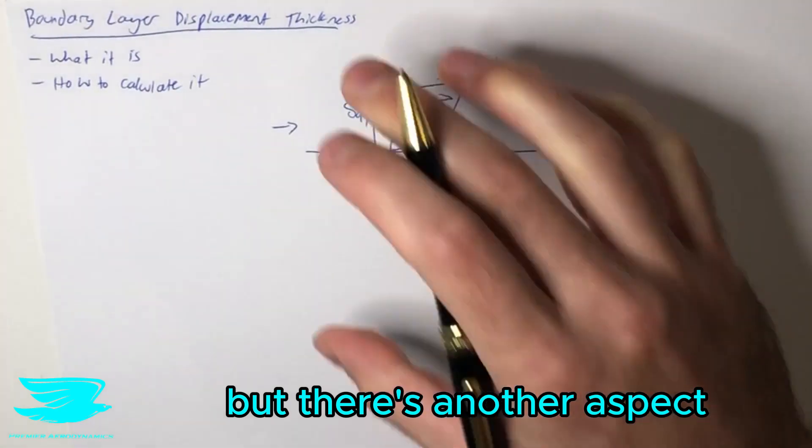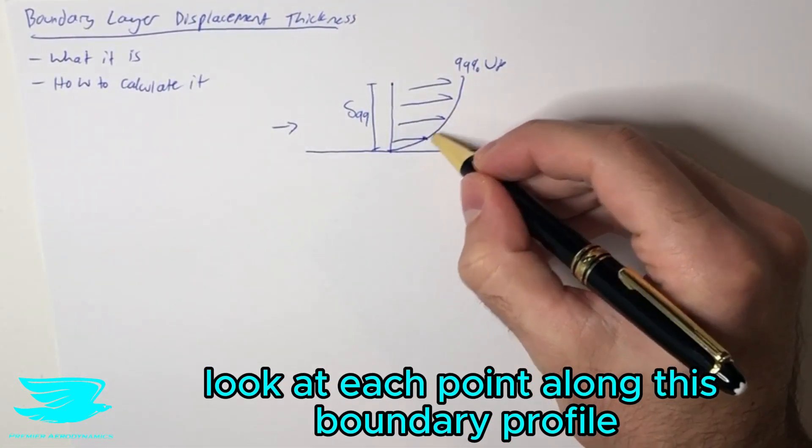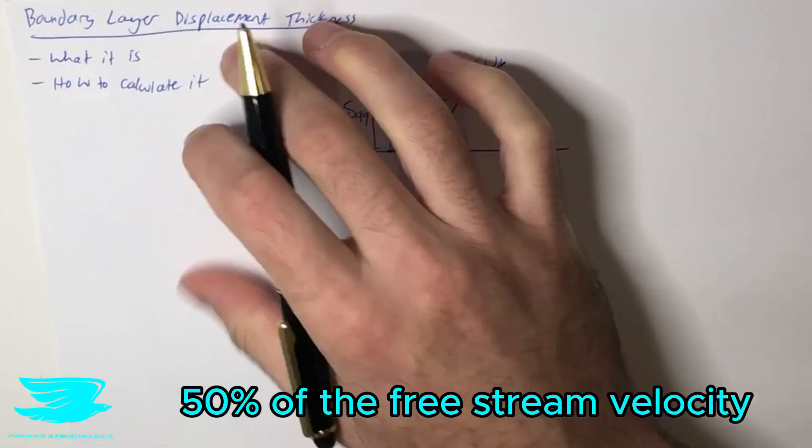But there's another aspect which is called the displacement thickness. So let's say we look at each point along this boundary layer profile, this point for example, and we see that the velocity is 50% of the freestream velocity.